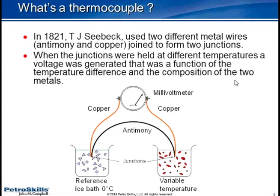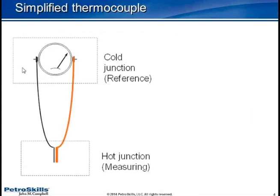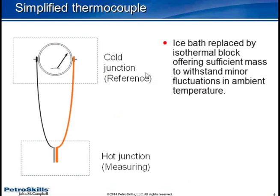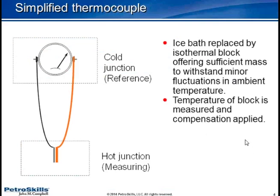Later, a man by the name of Peltier discovered the reverse effect. Obviously, it was cumbersome to make use of an ice bath, so we use what is called a cold junction reference. The ice bath was replaced by a block of material with sufficient mass to withstand fluctuations in ambient temperature, and by measuring the temperature of that block, we apply compensation.